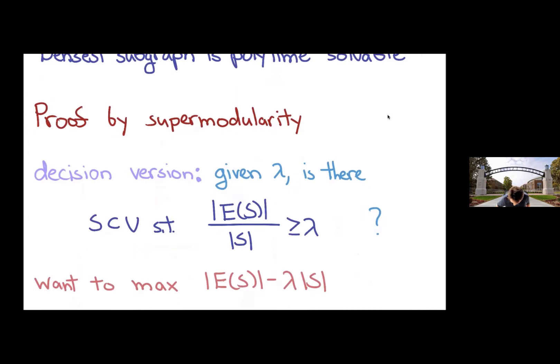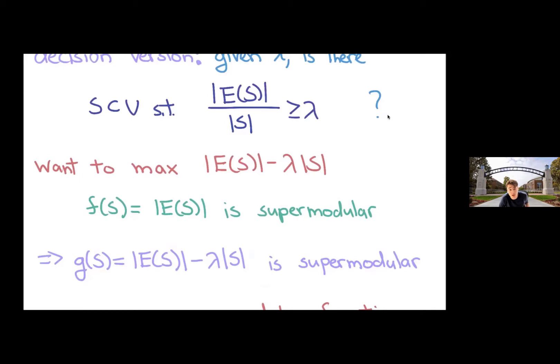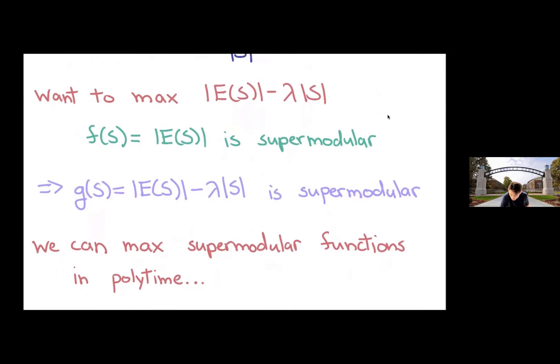Given a set of vertices, if you count up the number of edges inside, that's a supermodular function. I also subtract out the number of vertices, everything remains supermodular. And, of course, we can maximize a supermodular function in polynomial time.